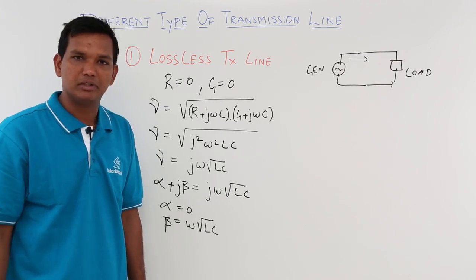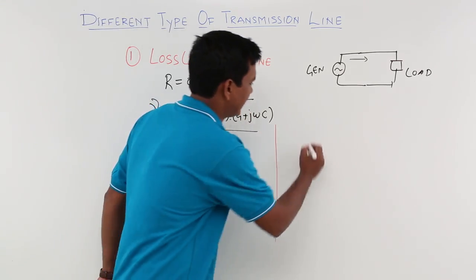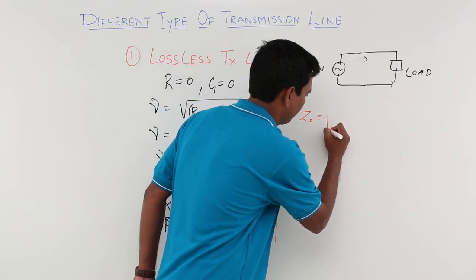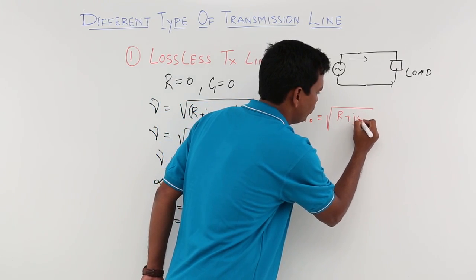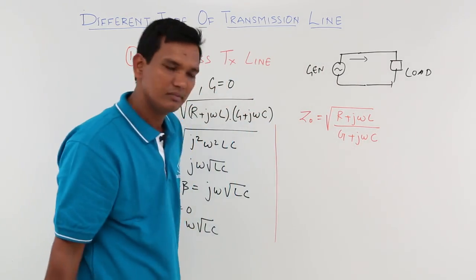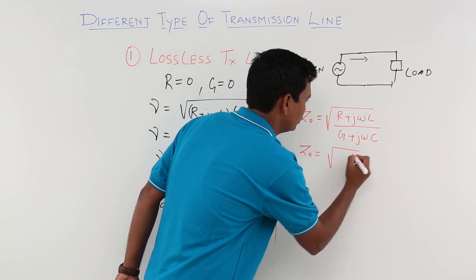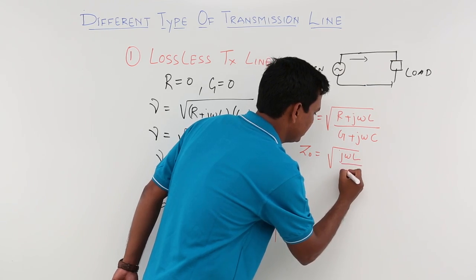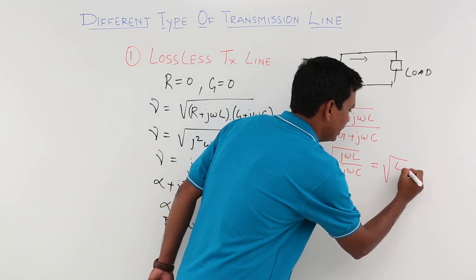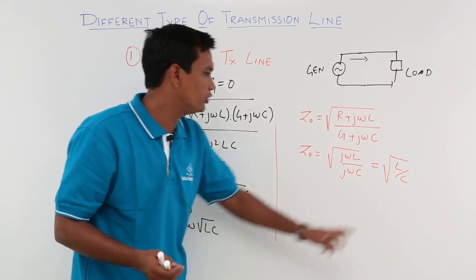Now let us look at the characteristic impedance. We have already derived the characteristic impedance equation in previous videos. It is the square root of (R + jωL) / (G + jωC). Substituting R = 0 and G = 0, Z₀ becomes the square root of jωL / jωC, which simplifies to √(L/C). So the characteristic impedance of a lossless transmission line is √(L/C).